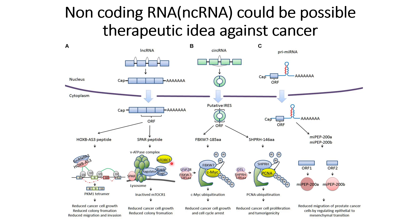The next category is circular RNAs. Circular RNAs have also been found to form peptides: FBXW7-185, which is 195 amino acids long, and SHPRH, which is 146 amino acids long.